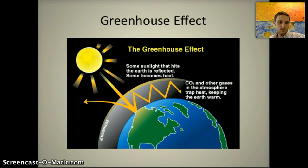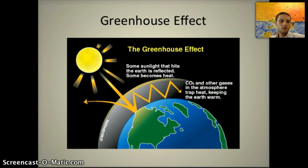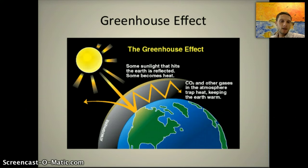What this results in is something called the greenhouse effect, and this is actually a natural process. It's necessary in order for Earth to stay warm — if this greenhouse effect didn't occur, our planet would be very cold and life as we know it wouldn't be able to survive. What's happening is much like a plant greenhouse that you've maybe been inside.